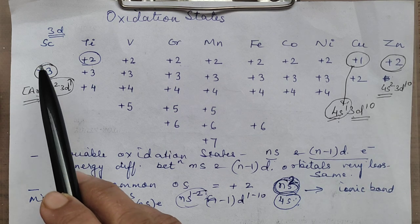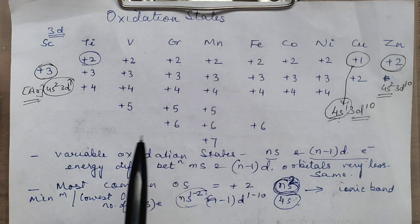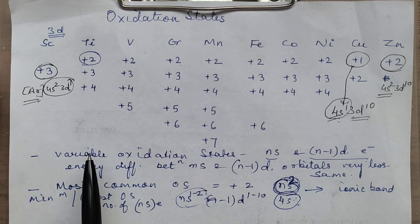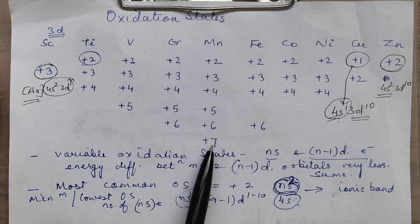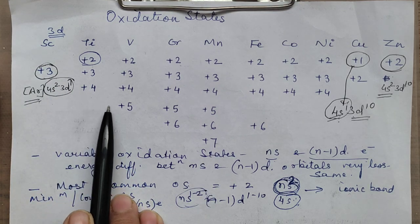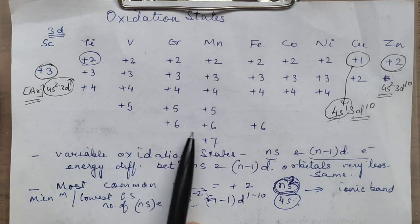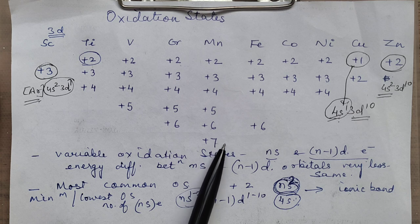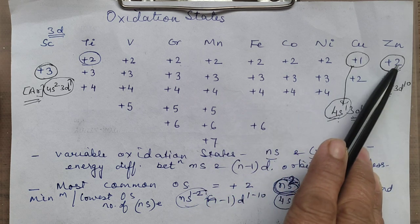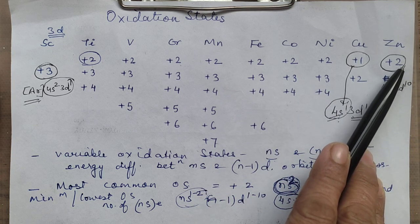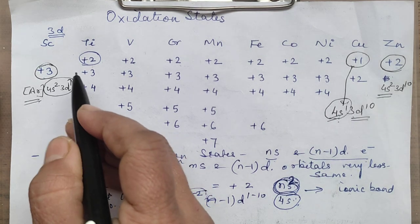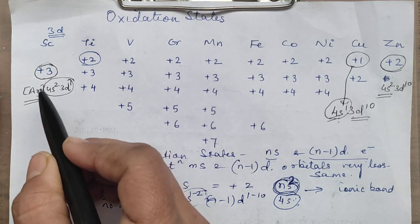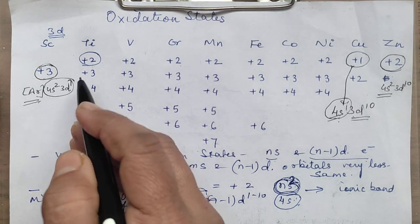Another thing you will find: the number of oxidation states these elements exhibit increases from scandium to manganese, and thereafter the number of oxidation states they exhibit decreases. The reason is the participation of electrons in bond formation.